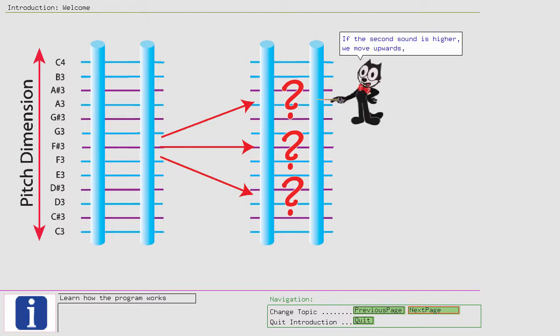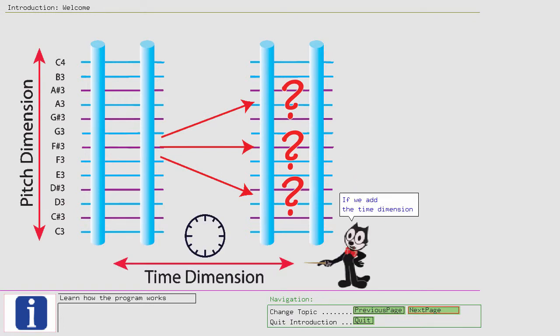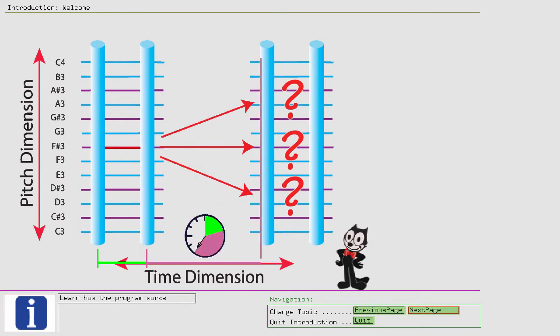If the second sound is higher, we move upwards. If the sound is lower, we move downwards. If we add the time dimension, meaning the amount of time between hearing two sounds, then we can test our sound memory.